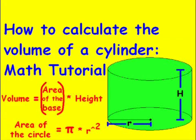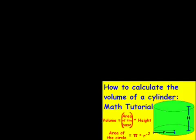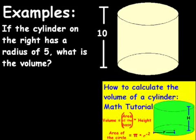Now next, I'm going to shrink this down, and we're going to go through two examples. Okay, in our first example, I have drawn a cylinder on the right. The 10 in white, that is the height, so we have a height of 10. And the question is, if the cylinder on the right has a radius of 5, what is the volume?